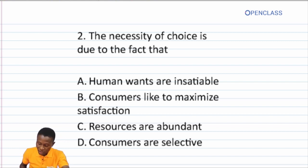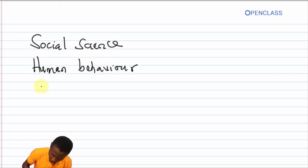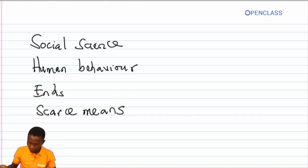These are the keywords in that definition: a social science, it studies human behavior, as a relationship between ends and scarce means. Now what do we mean by social science? Any science or field of study that focuses on human interaction is said to be a social science.